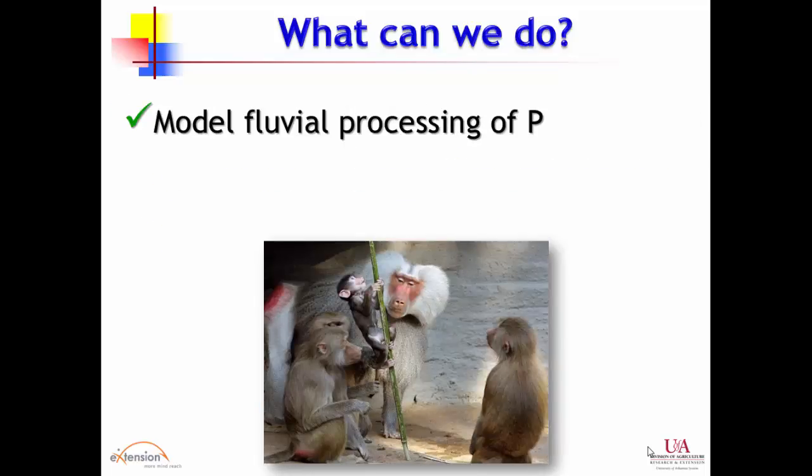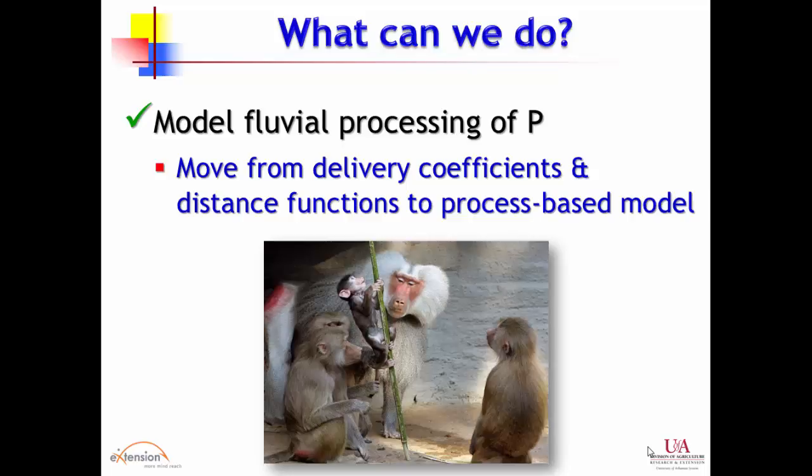We are deficient in modeling nutrient transport once phosphorus enters the water. The SWAM (Soil-Water-Agriculture Model) approach by Don de Corsi looked at uptake and release in stream channels, but it was ultimately abandoned because the complexities of nutrient uptake and release in stream channels could not be adequately handled. Most current models still lack that processing. Improving process-based models — moving away from empirical and delivery coefficients — will help us better account for legacy phosphorus.